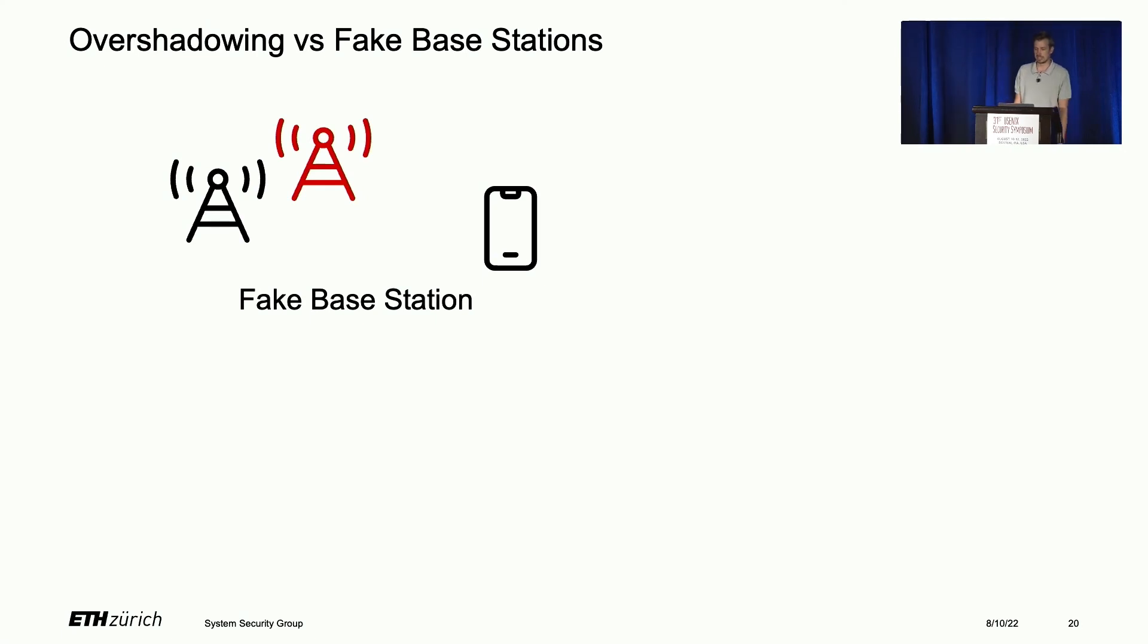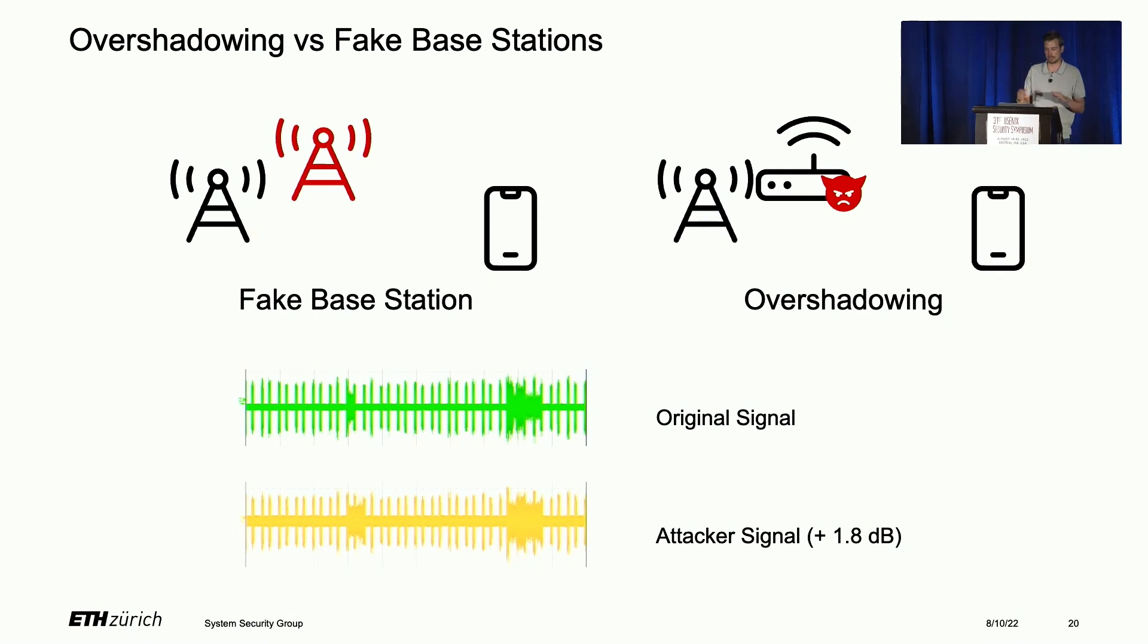This was usually done using IMSI catchers based on fake base stations. However, we have a new attacking method called overshadowing, where we don't send something all the time like a fake base station, but only overshadow one single message in the protocol. This is way better than fake base stations, not only because we send for a very limited time, but also we need only 1.8 dB more power than the original signal, whereas for fake base stations it's roughly 30 dB. Our overshadowing is very stealthy, not detectable at all, and normal detection methods for fake base stations don't work.